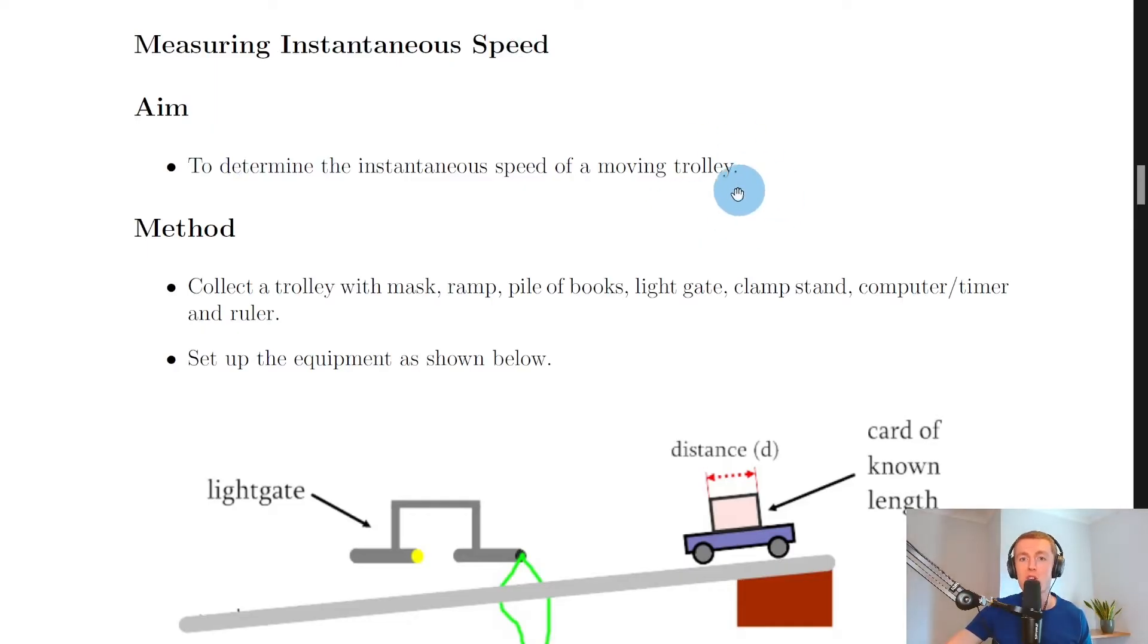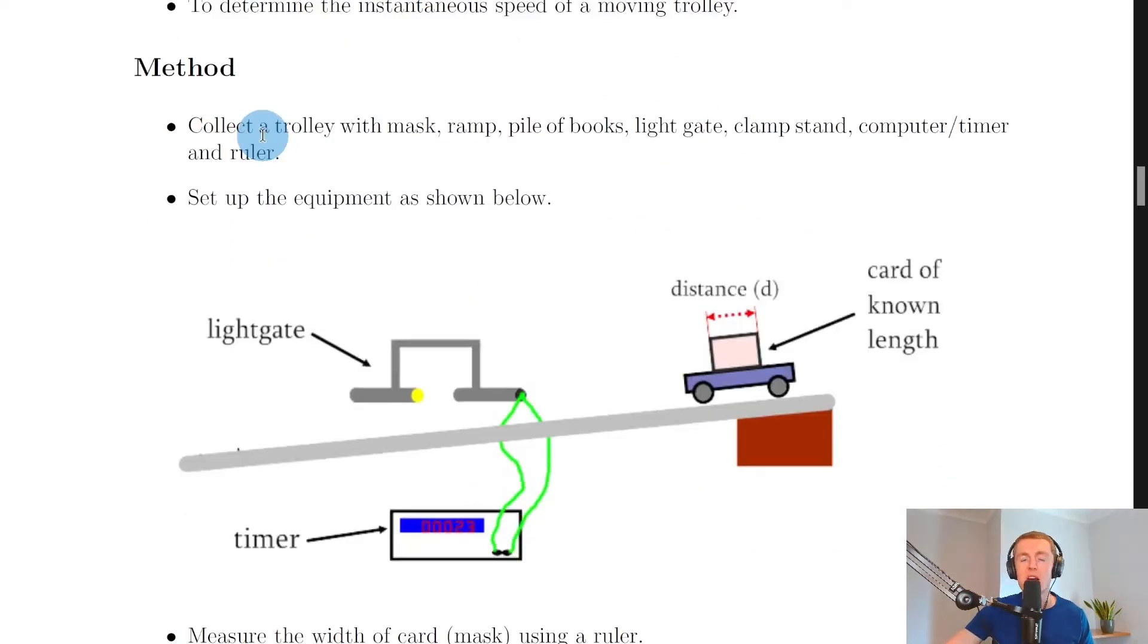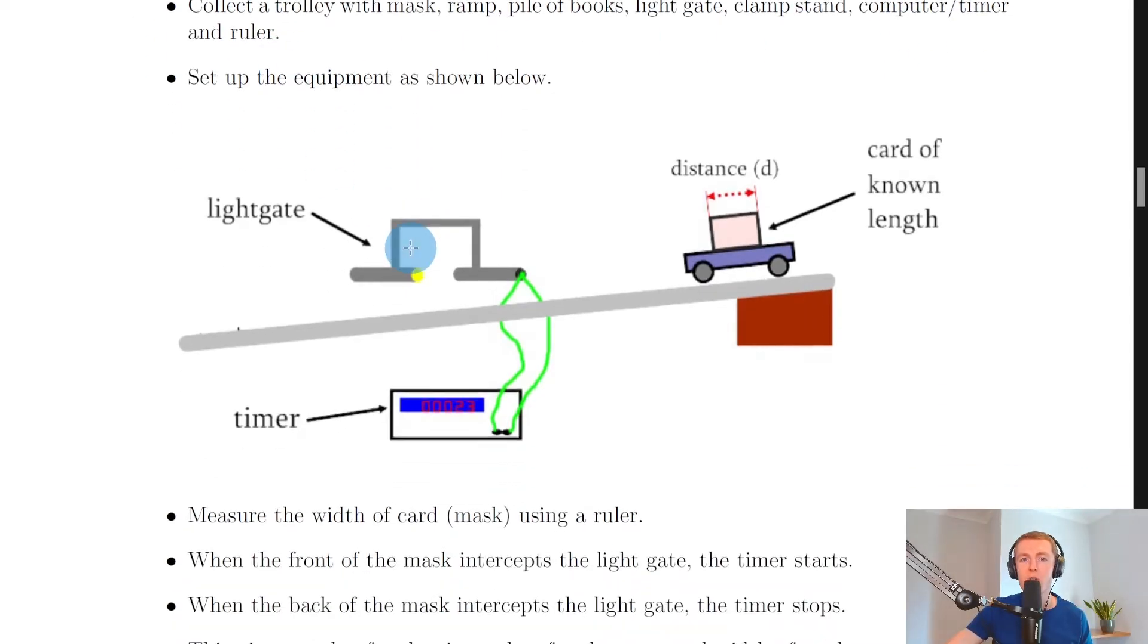Let's say the method for this experiment involved collecting a trolley with a mask, ramp, pile of books, light gate, clamp stands, computer or timer, and a ruler. You could set up the equipment as shown below. You'll see it's very similar to the setup for measuring average speed.